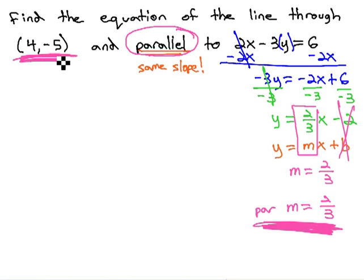We were also given this point, (4, negative 5), that we want our line to go through.